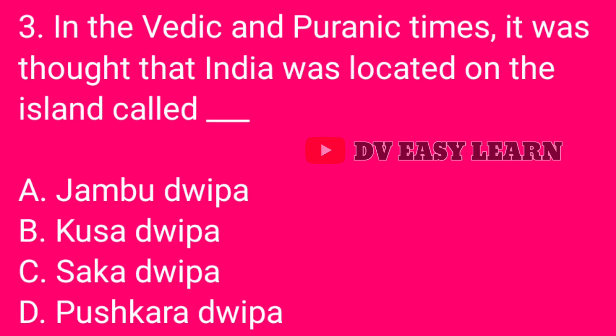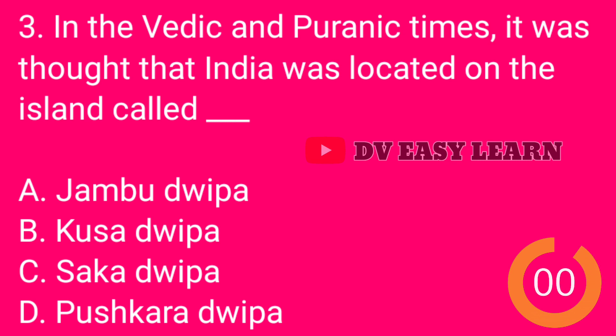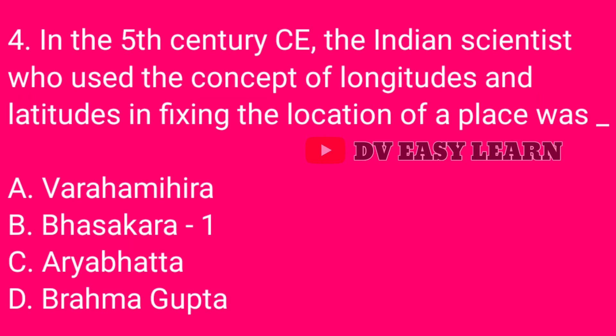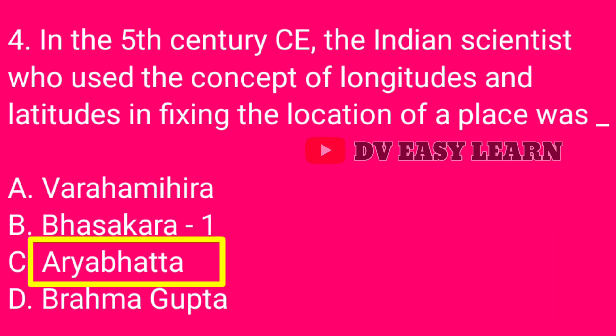Question number 3: In the Vedic and Puranic times, it was thought that India was located on the island called — correct answer: Jambudvipa. Question number 4: In the 5th century Common Era, the Indian scientist who used the concept of longitudes and latitudes in fixing the location of a place was — correct answer: Arya Bhatta.